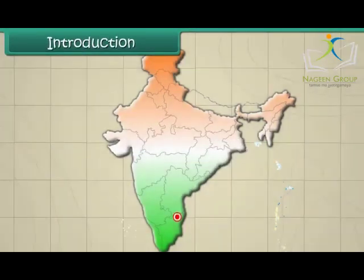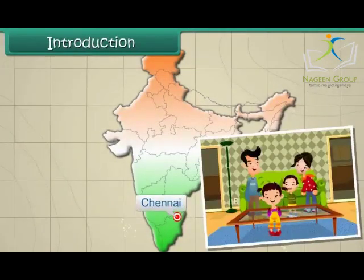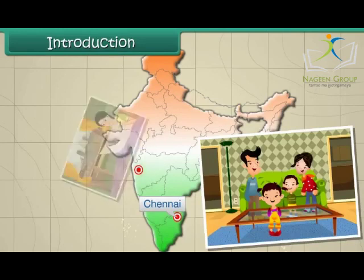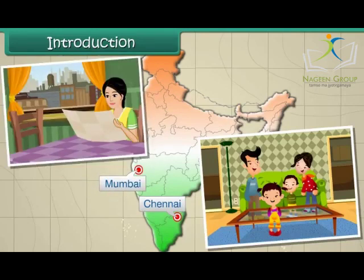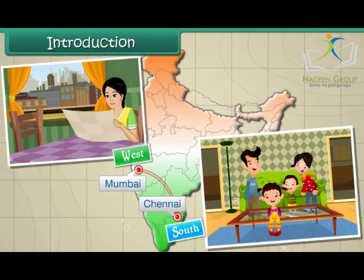Introduction. Aditi lives with her parents in Chennai. Her aunt lives in Mumbai. She visits her aunt every year in April. So, she travels from south to west.